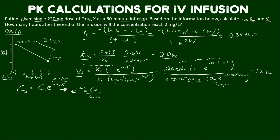First, move C-max below C2 to isolate the exponential part of the equation. Then raise both sides to the natural log to remove the exponent. We then move KE down to the denominator, and apply the log property that converts a ratio inside a natural log into a subtraction, making it much neater.